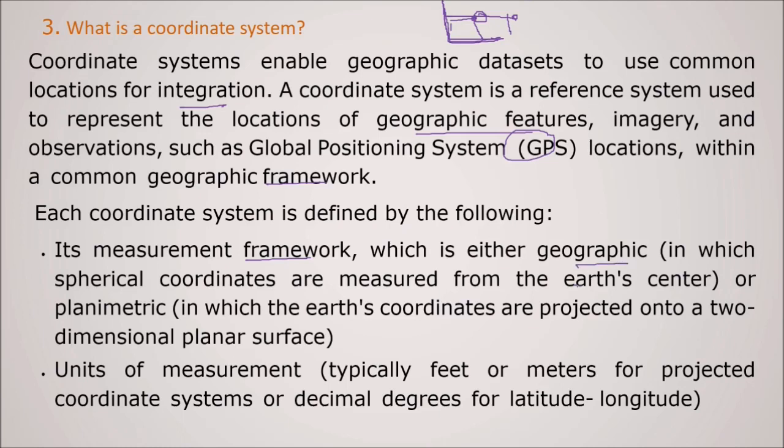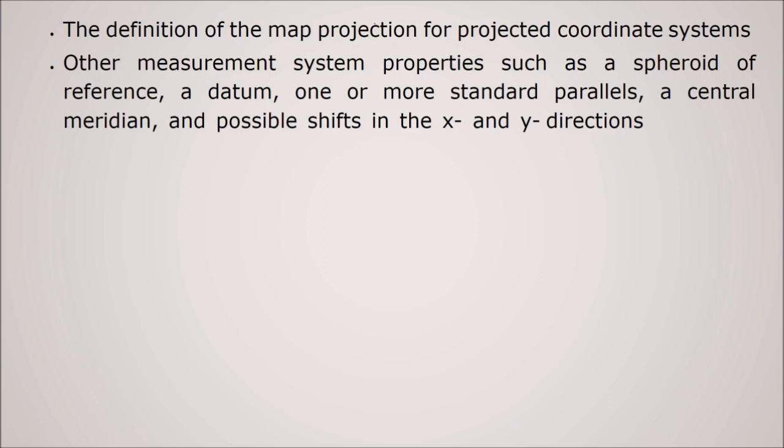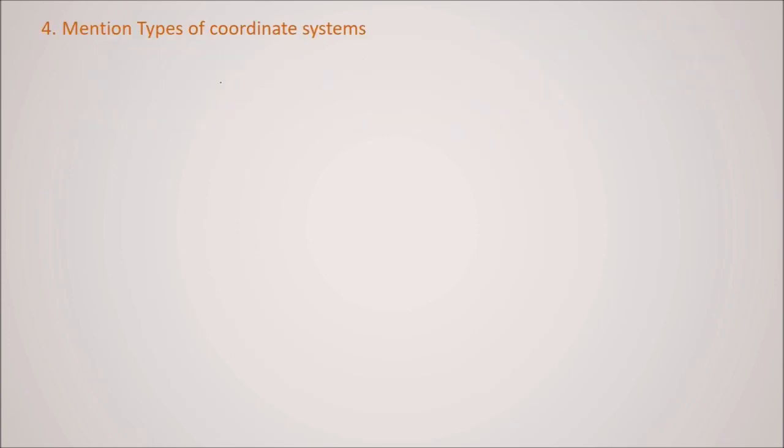Each coordinate system is defined by first its measurement framework which is either geographic in which these spherical coordinates are measured from the earth center or planimetric in which the earth coordinates are projected onto a two-dimensional planar surface. The unit of measurement also - the earth coordinate system is defined by unit of measurement. It can be feet or meter for projected coordinate system or decimal degrees of latitude and longitude. The definition of map projection for projected coordinate system, other measurement system properties like spheroid of a reference, datum, one or more standard parallels, central meridian, a possible shift in x and y directions.